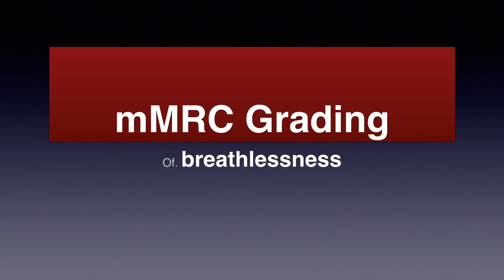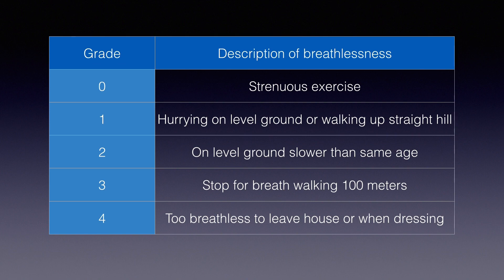The Modified Medical Research Council Scale, or the mMRC Scale, is a grading scale recommended for assessment of dyspnea and disability. It functions as an indicator of exacerbation. This scale can be printed out and handed over to the patient to tick the box that applies to them. Only one box from grade 0 to 4 can be selected.